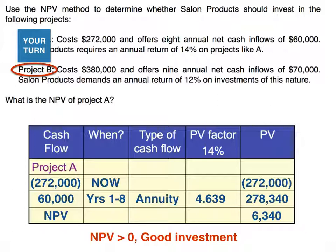Here is Project A. First, we invested $272,000 in Project A — that amount right now is worth $272,000, and it's going out of our pocket, which is why it's shown in parentheses. The $60,000 annual net cash inflows is a positive annuity occurring years one through eight. We looked up the present value of annuity factor at 14% to be 4.639. Multiplying that times $60,000 gives us the present value of those eight cash inflows of $278,340.